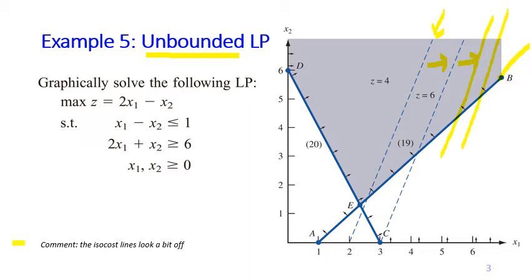Just a small note from me, I think the isocost lines here, the scale is a bit off the gradient. But it doesn't matter actually, in this example, the idea is just showing you that there are some cases where you can always push the isoprofit line further and further to get the better and better solution without any bound. That's why it's called unbounded problem.